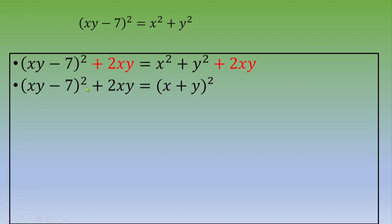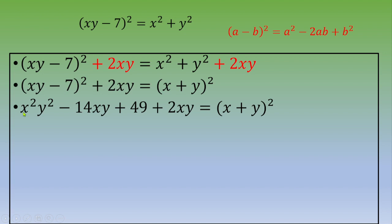On the left, you've got (xy minus 7) squared plus 2xy. This 2xy can be simplified if you expand (xy minus 7) squared. Thanks to the remarkable identity (a minus b) squared equals a squared minus 2ab plus b squared, you end up with x squared y squared minus 14xy plus 49 plus 2xy equals (x plus y) squared.